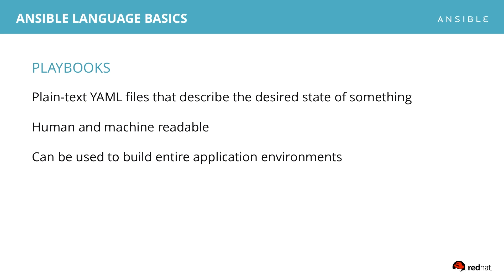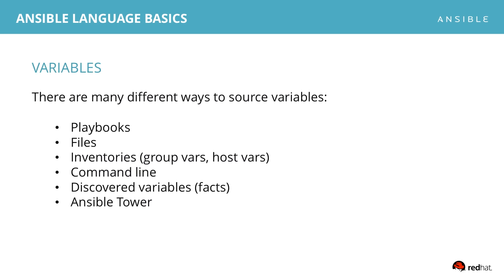First, we'll start with playbooks. Playbooks are written in the Ansible automation language, which is YAML-based. These files describe the desired end state of something. They're human and machine readable and don't require any special coding skills to use. Playbooks can be really simple — just a few lines — or built up to describe entire applications as well as the environments they run in.